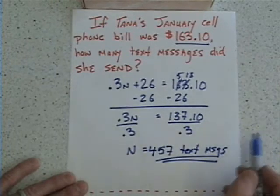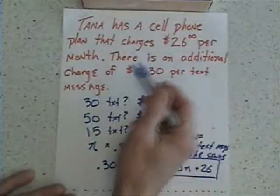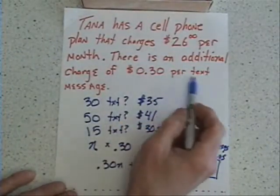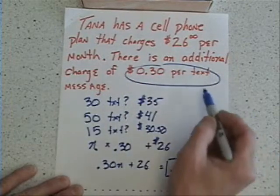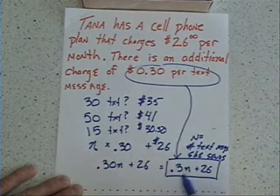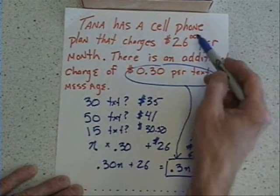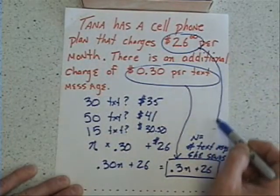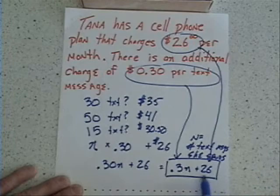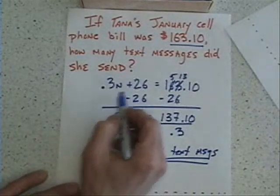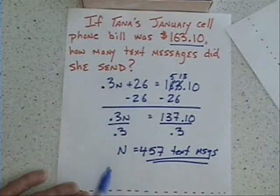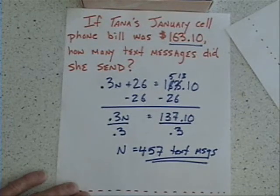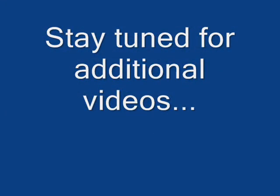This is an example of how we've taken a word problem where someone has a cell phone bill with a base charge of $26 per month and a per-text value. Notice how the per-text value ends up being the coefficient multiplied by our variable, and the $26 she had to pay no matter what becomes our constant — showing up in the equation and also coming into play when we actually solve the problem.